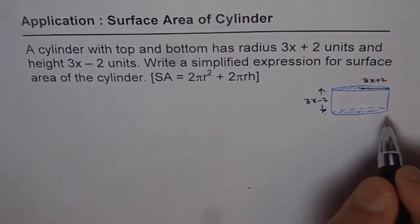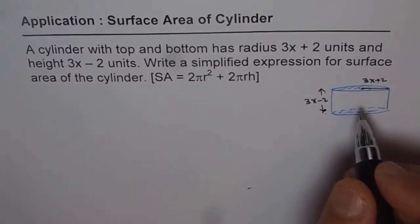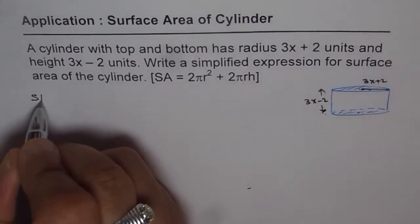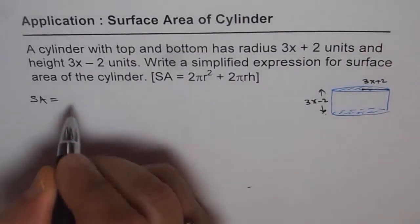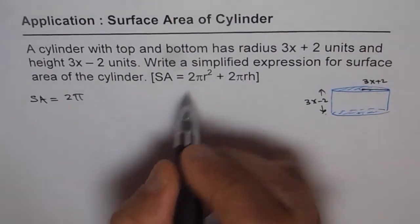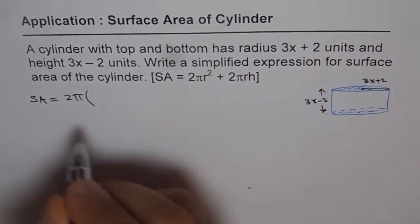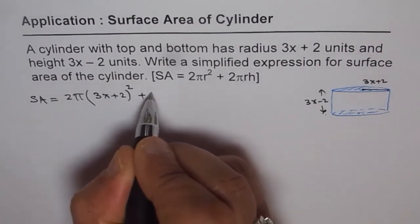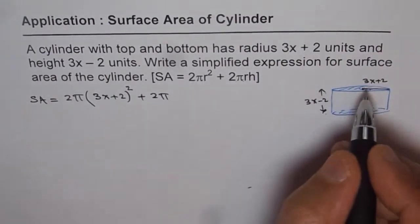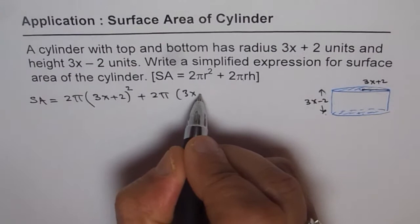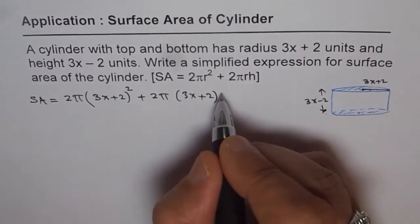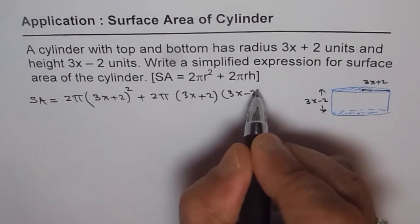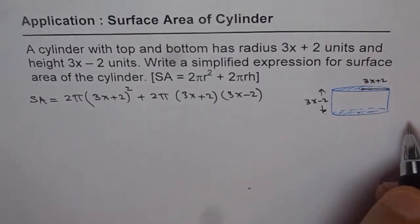Now let's plug in these values in the given formula and find the answer. So we get surface area equals to 2 pi r square. So the radius is 3x plus 2, write 3x plus 2 whole square plus 2 pi r, r is 3x plus 2 times height which is 3x minus 2.